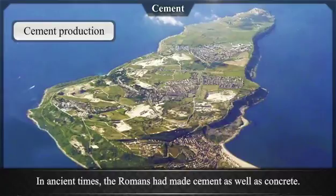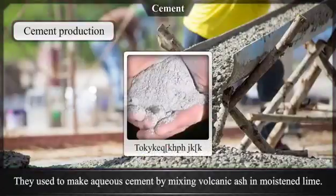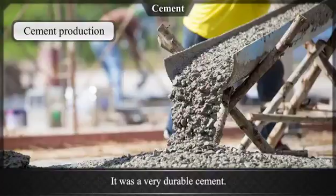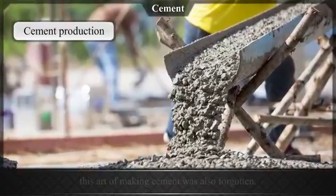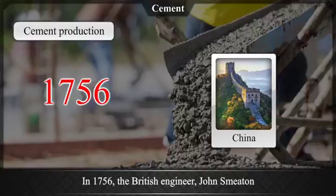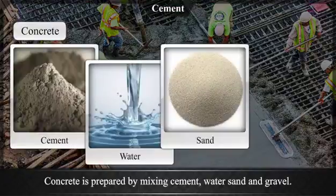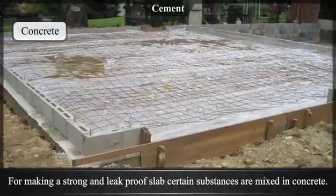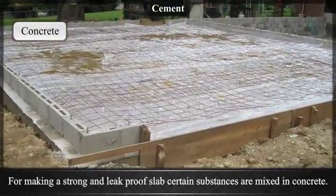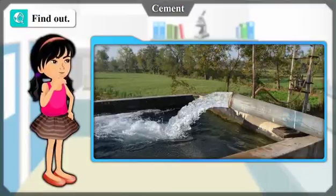In ancient times, the Romans made cement as well as concrete. They made aqueous cement by mixing volcanic ash in moistened lime — it was a very durable cement. With the decline of the Roman Empire, this art of making cement was forgotten. In 1756, British engineer John Smeaton developed the method of making aqueous cement. Concrete is prepared by mixing cement, water, sand, and gravel. For making a strong and leak-proof slab, certain substances are mixed in cement. Find out: Why are roads nowadays made of concrete? What causes the hardness of water?